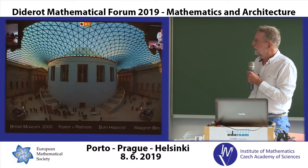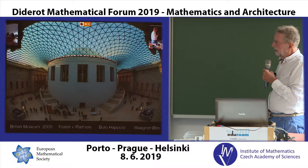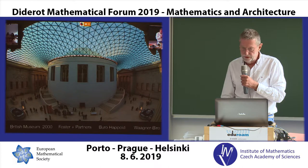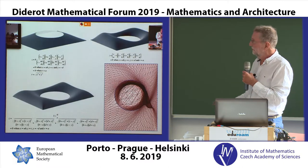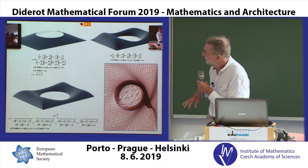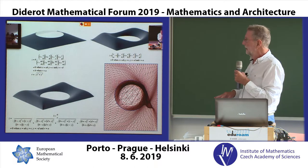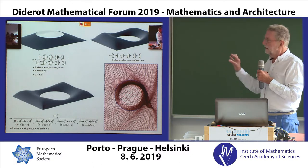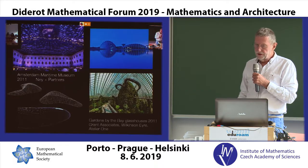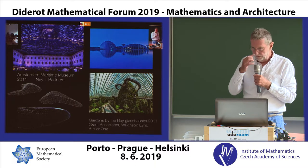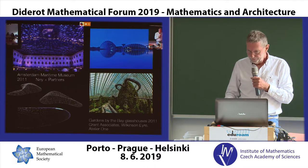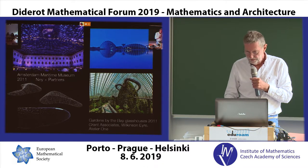A more recent project, which Robert referred to briefly, was this one by Foster & Partners and Buro Happold. My role was to write the computer software to define the geometry of the roof. You can see the mathematical equations which define the surfaces that define the roof. Other projects since then include the Amsterdam Marthia Hype Museum by Ney and Partners, and Gardens by the Bay with Atelier One and Wilkinson Eyre.